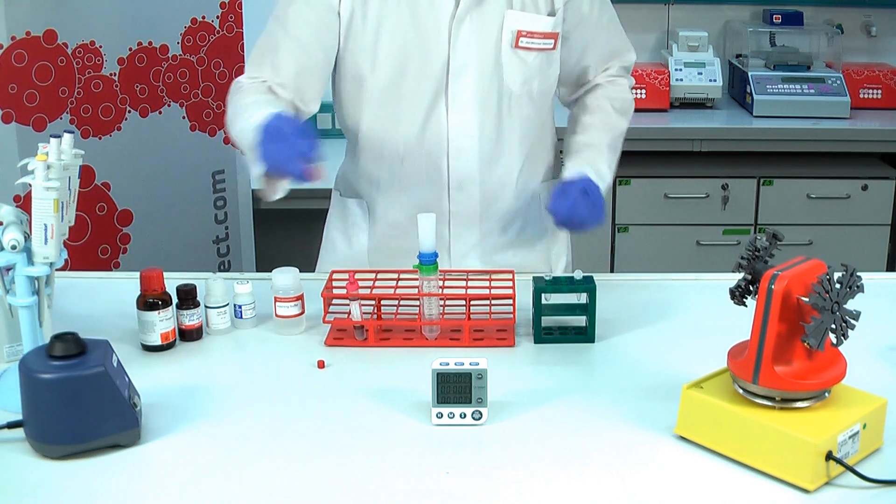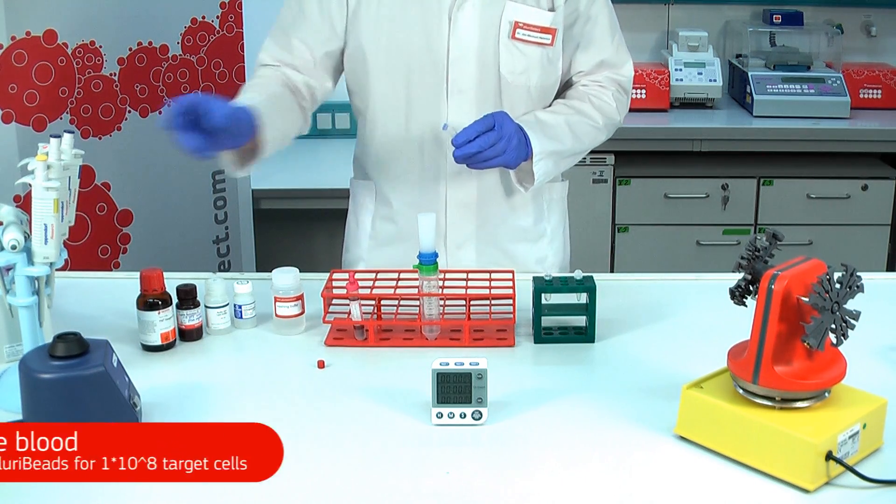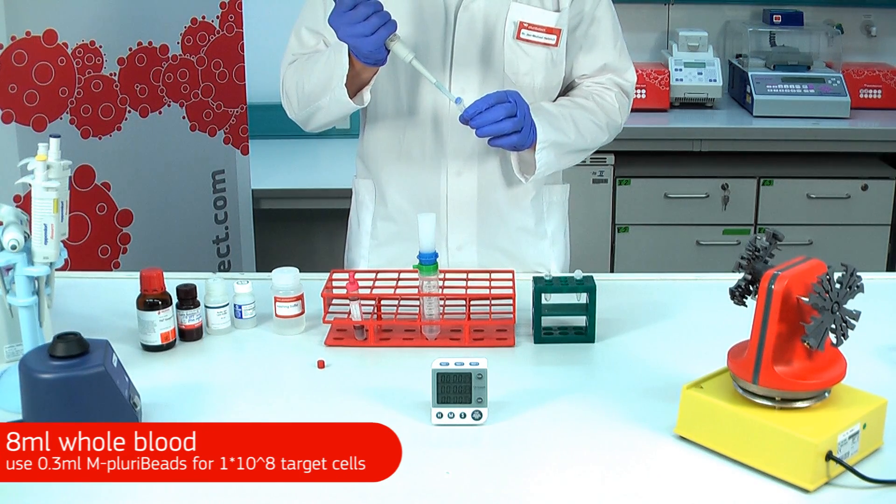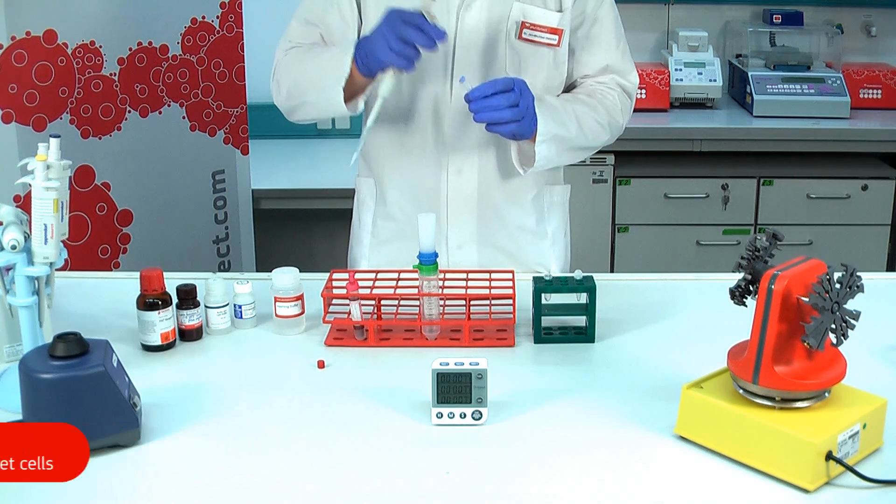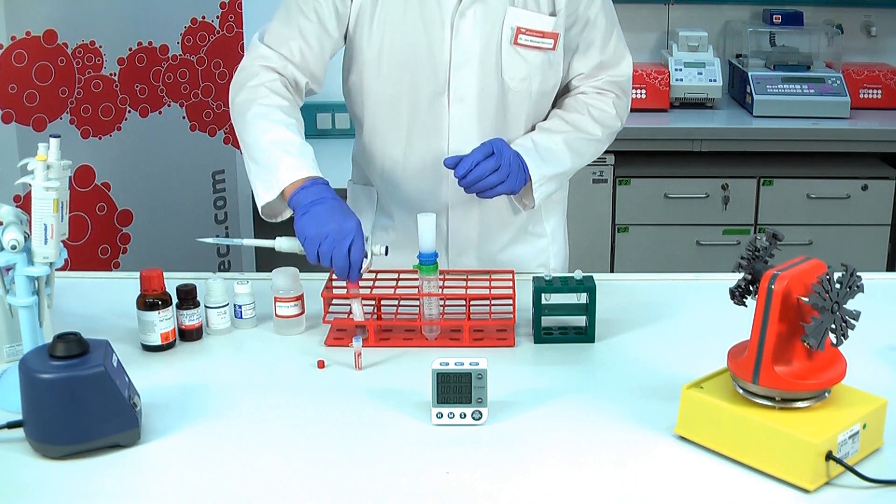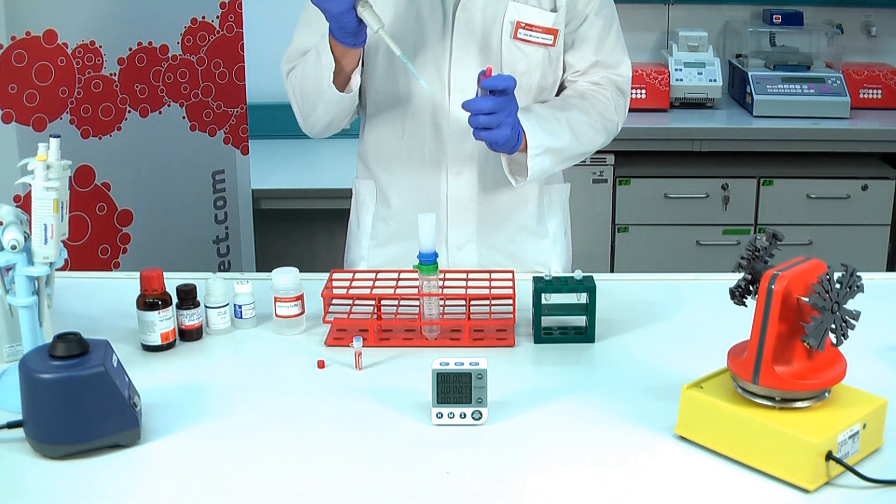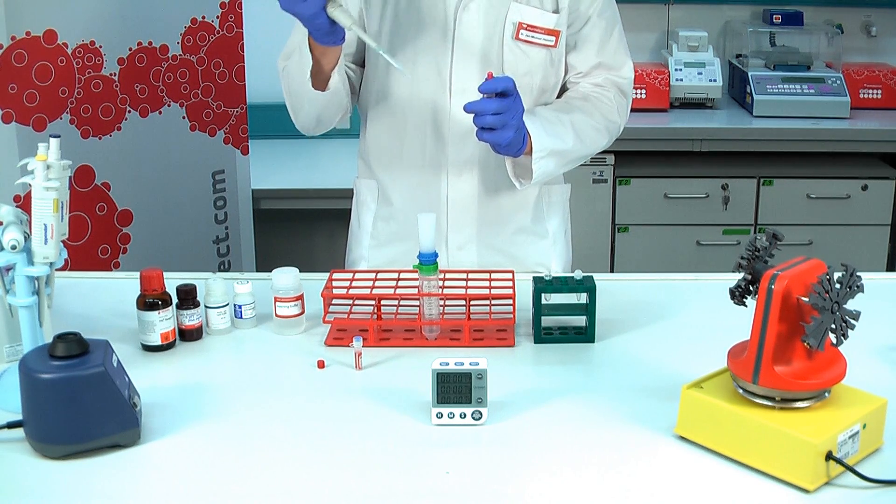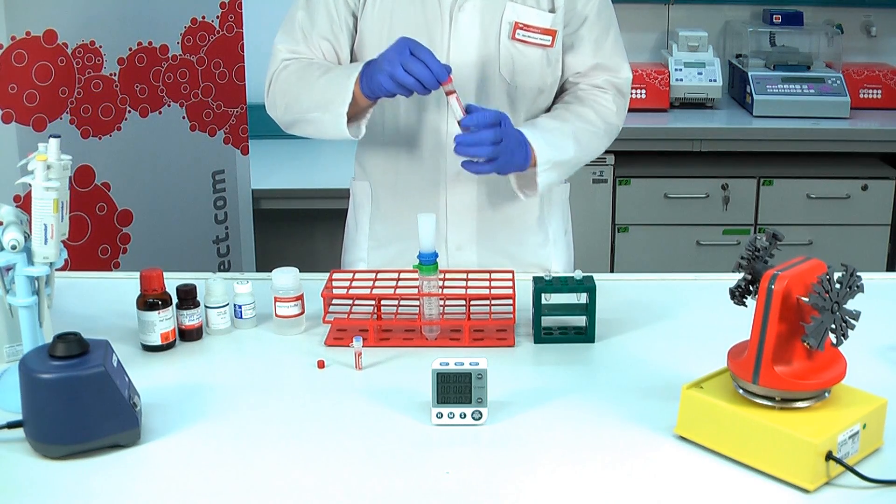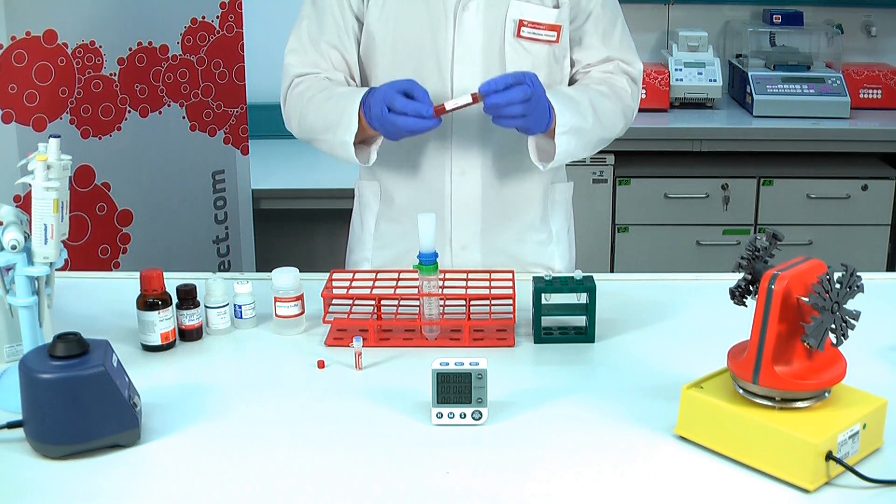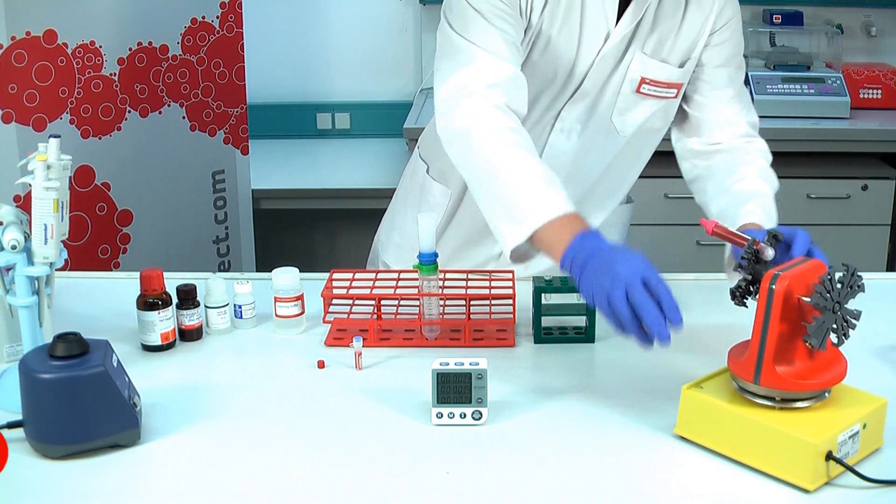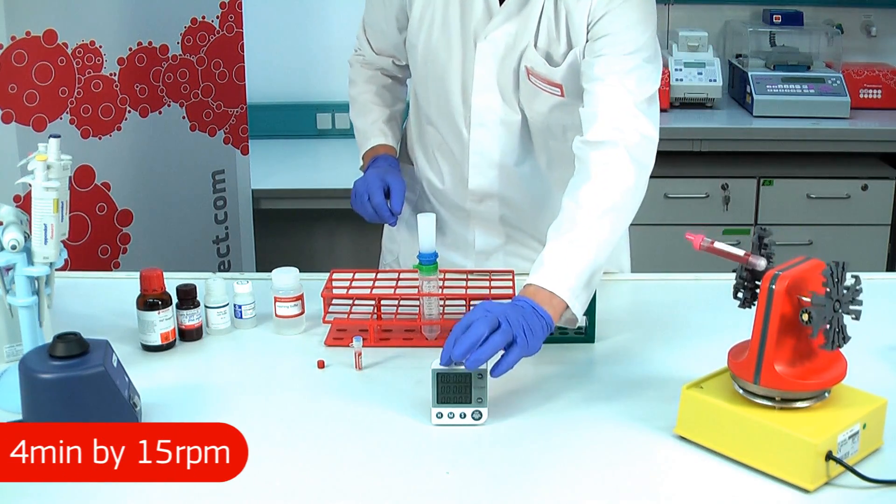Vortex the plurib beads and add them to your sample. For this tutorial we use 8ml. Tilt your sample up and down and incubate it on our pluriplex or rolling mixer for 4 minutes by approximately 15 rounds per minute.